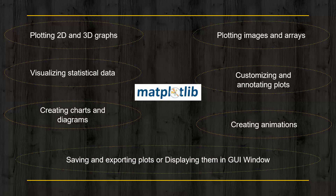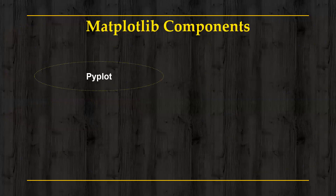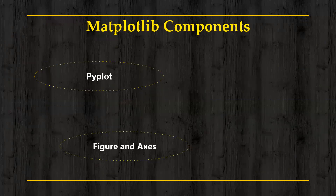Matplotlib also supports saving and exporting plots or displaying them in a GUI window. In summary, Matplotlib provides a comprehensive and flexible library for creating a wide range of data visualizations in Python. Now, let's discuss Matplotlib components. Matplotlib is composed of several components. First is pyplot — this is a very useful module that provides a high-level interface for creating plots and charts. It is the most commonly used interface in Matplotlib, and we will use the alias name 'plt'. The next component is Figure and Axes — a Figure represents the entire plot, while an Axes represents a single plot within the Figure.